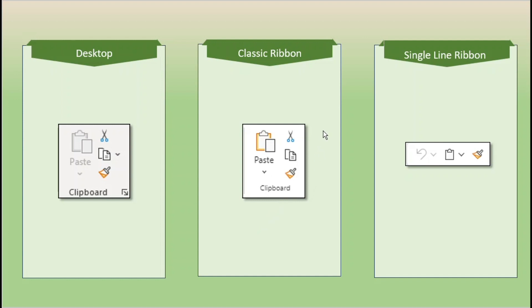The classic ribbon for the browser version also has cut, copy, paste, and the format painter. There is a difference in that copy here doesn't have a dropdown where there is one in the desktop version. The single line ribbon has undo with it, but it also has a clipboard for paste and the format painter. So we need to investigate the dropdown here to see what the choices are.